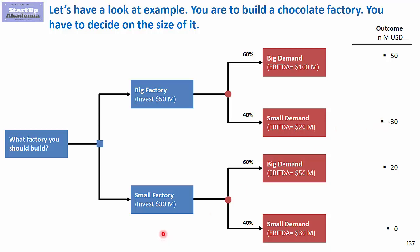We have the same for the small factory: 20 million outcome in the scenario where we have big demand, and zero for small demand. So we have to calculate the impact of the big factory and small factory given those two different scenarios, using the outcomes and probabilities.